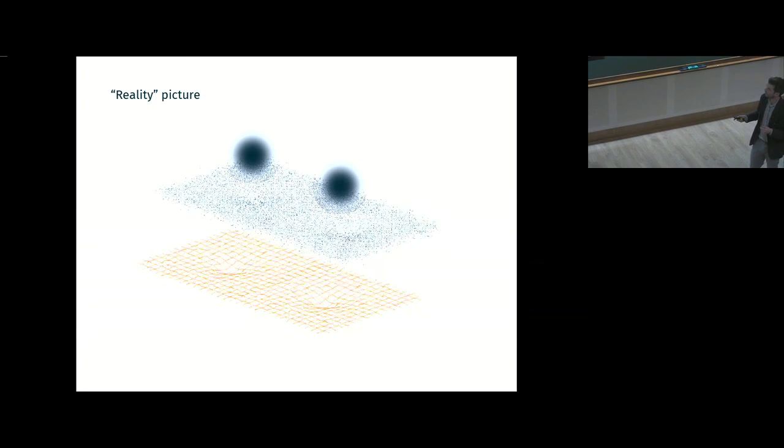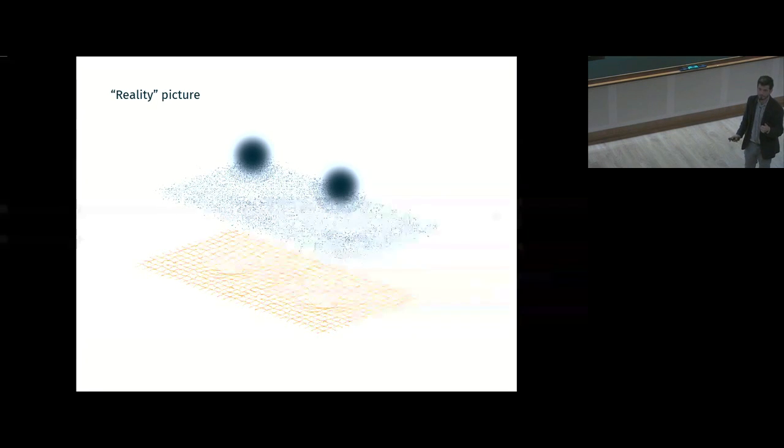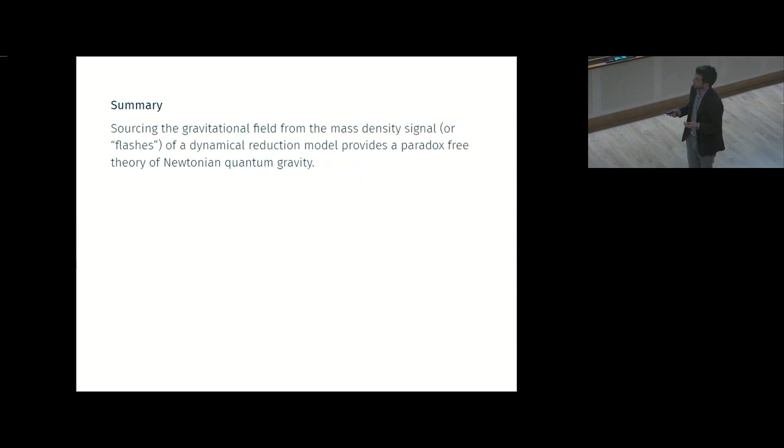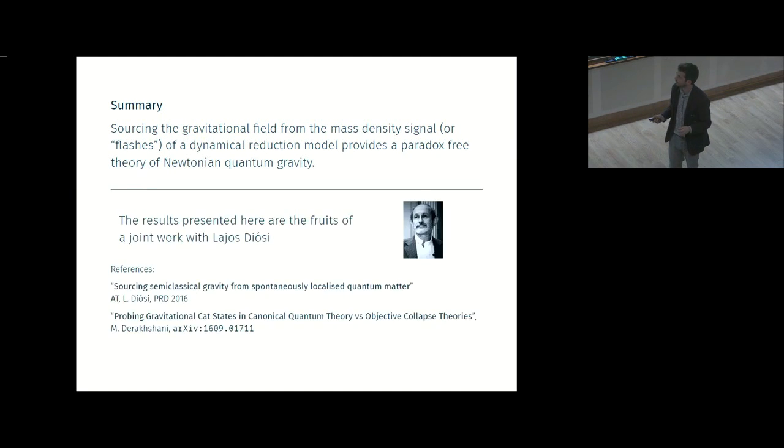So this is really important as it shows that, I think there are very few cases. I think the first case is making relativistic collapse models, but the second case is this, where being very clear on what is the primitive ontology, what is real in your theory, helps you solve an actual problem. A real problem, not just a philosophical one. So to summarize, if you source the gravitational field from the mass density signal instead of the mass density average of a dynamical collapse model, you have a paradox-free theory of Newtonian quantum gravity. So if you buy dynamical reduction models to solve the measurement problem, then you get gravity for free. That's, I think, quite nice. So I'm done.